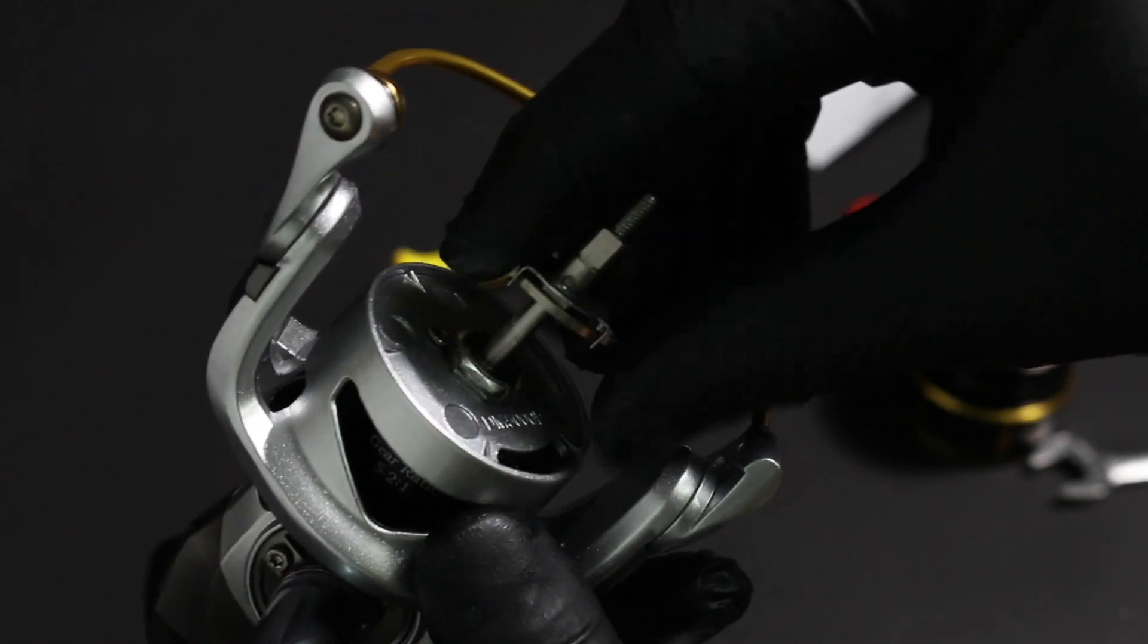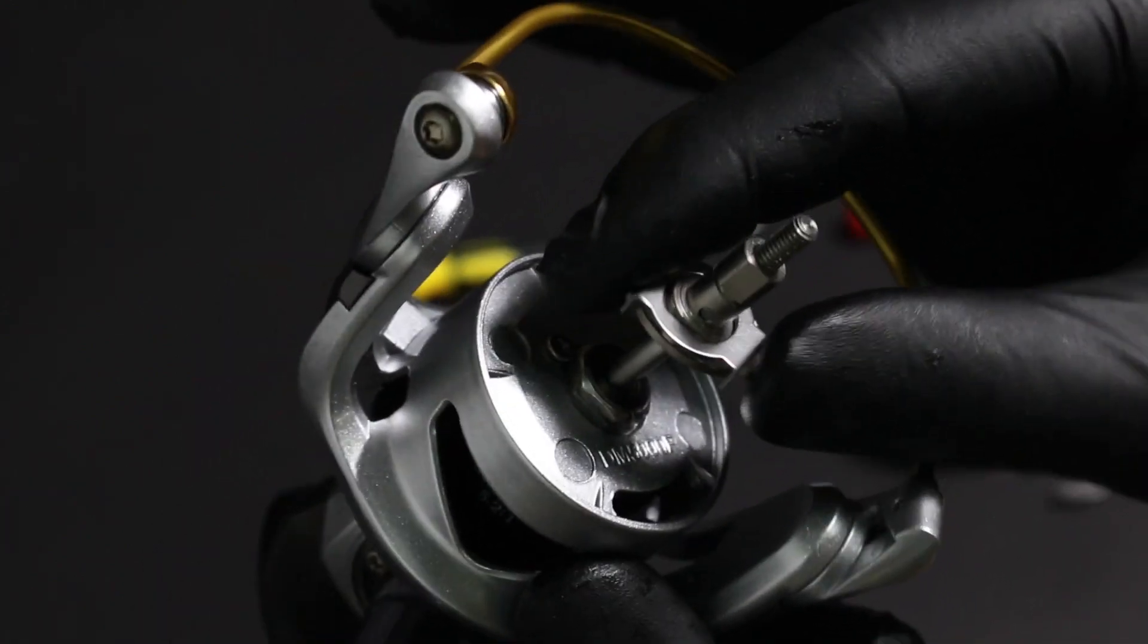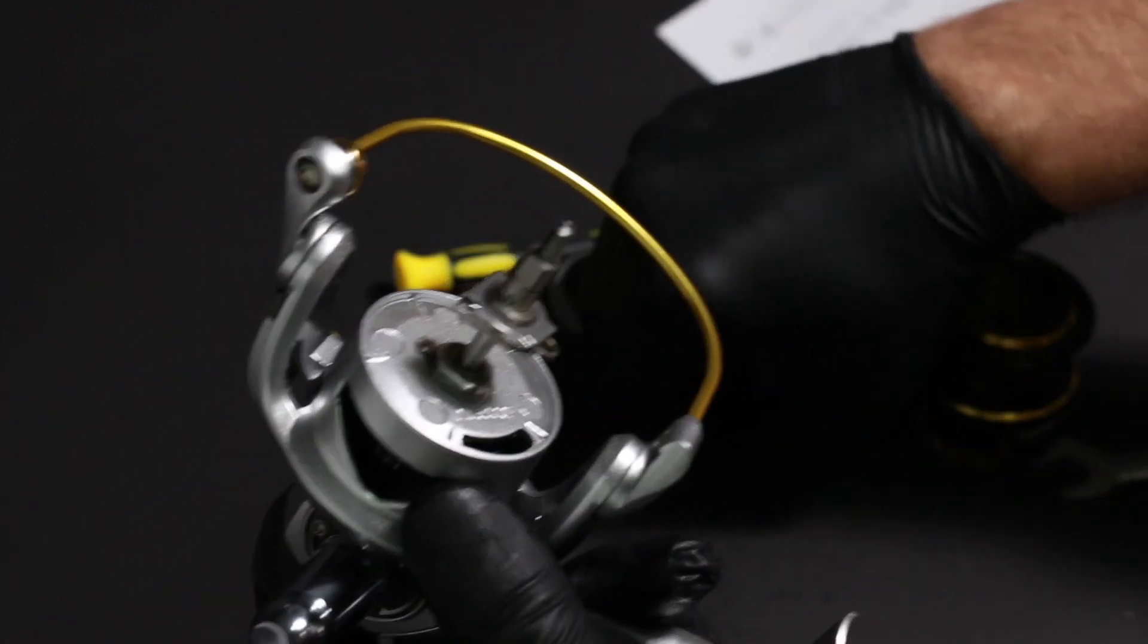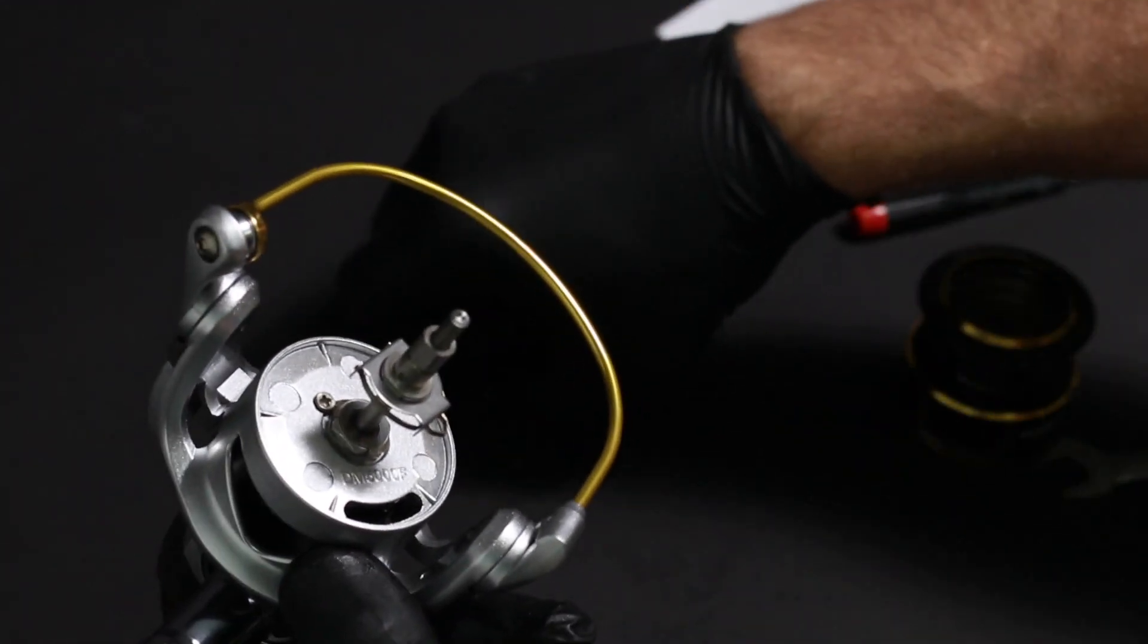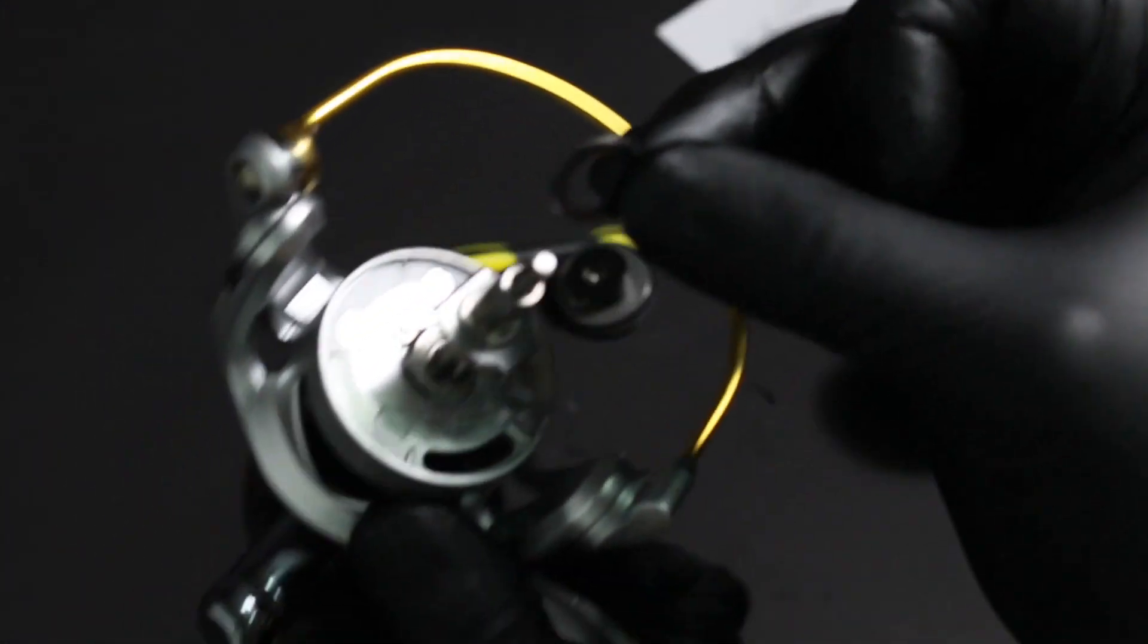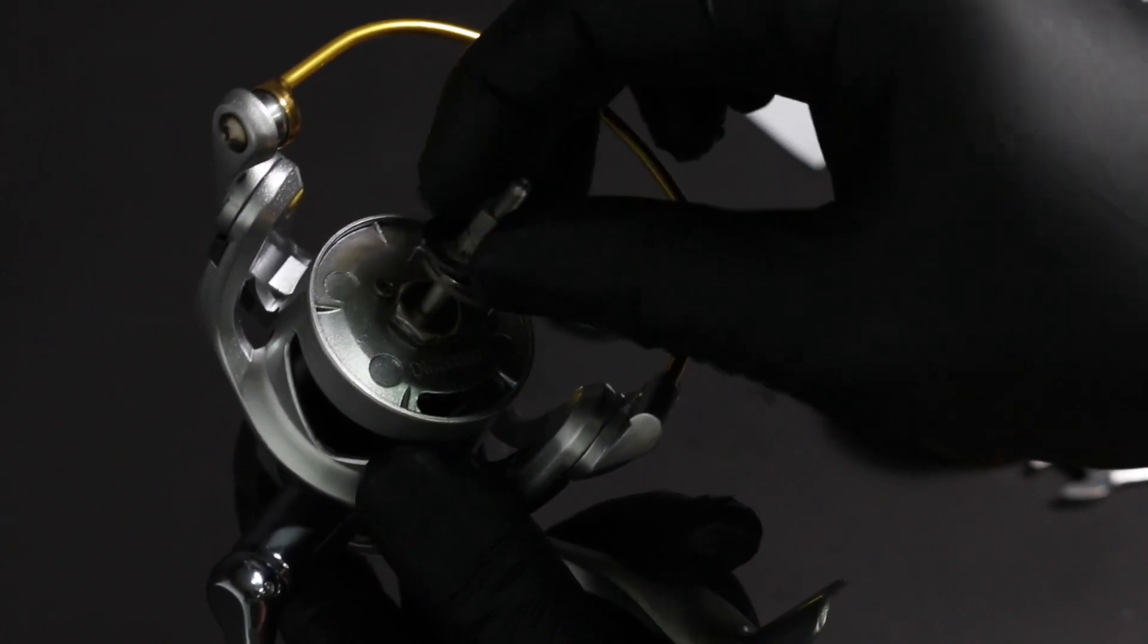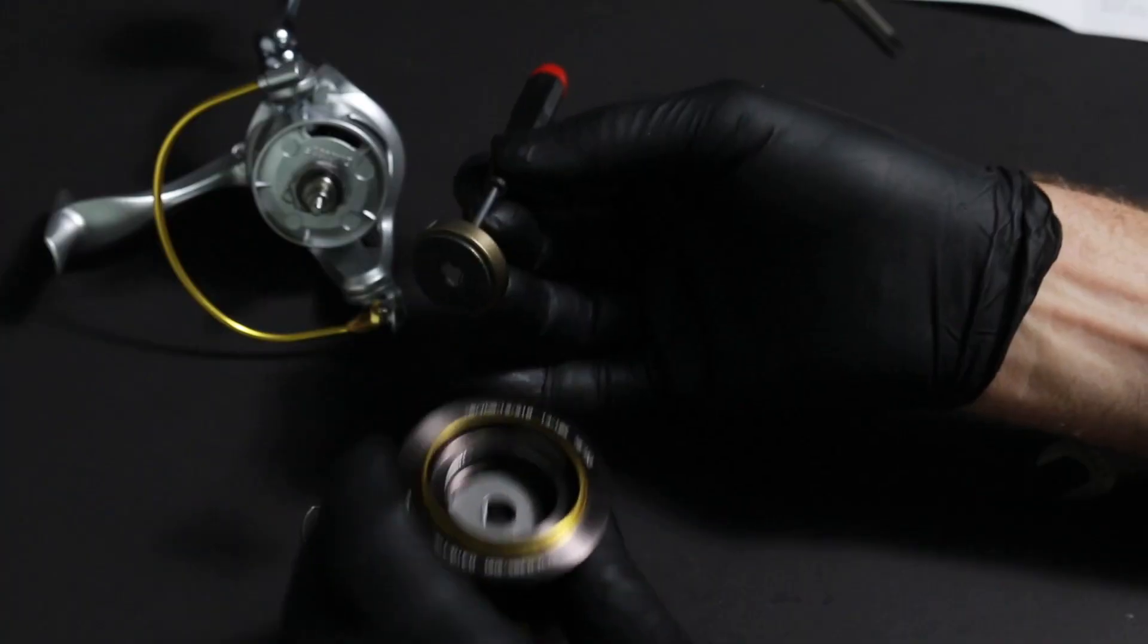And looks like there's a lot of all metal parts even on the little clicker that makes the drag audible. It's all got metal springs and metal gears there to make the audible sounds, which on some higher end reels that I paid a lot more money for than this, had plastic parts which I wasn't too happy with. Everything looks to be well made and a good choice of material.